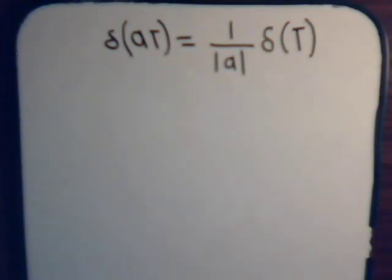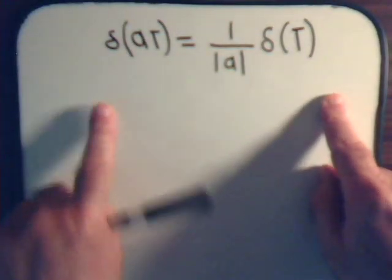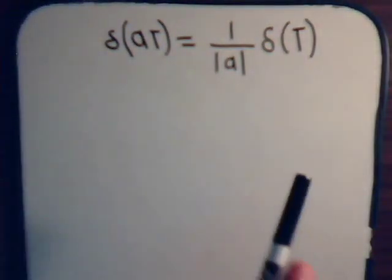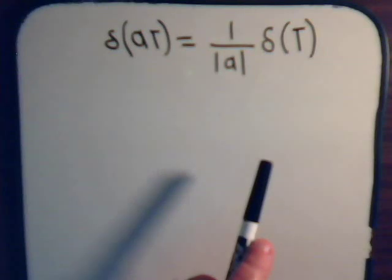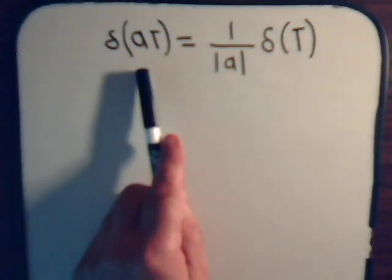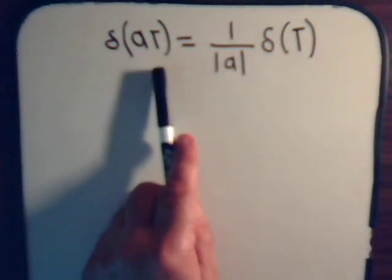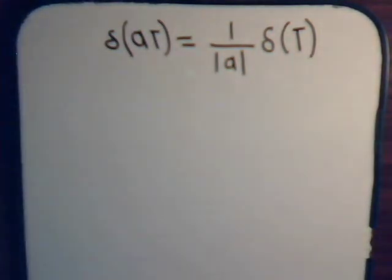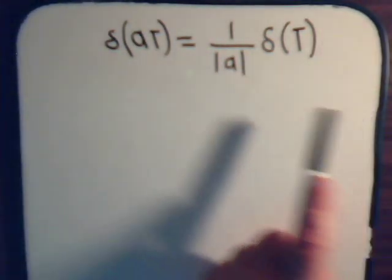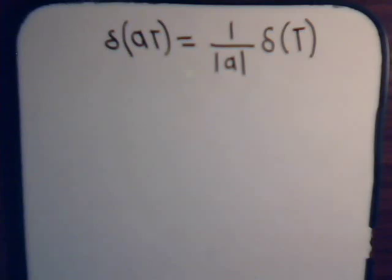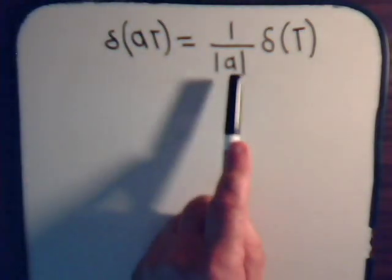In this video we want to derive what is called the scaling property of the Dirac delta function. It's a simple enough equation. All we're saying is that if we have the Dirac delta function of some constant multiplied by our variable t, it's the same thing as the Dirac delta function of just t divided by the absolute value of the constant.